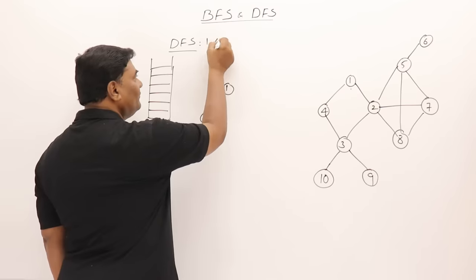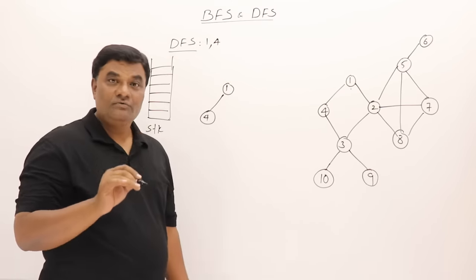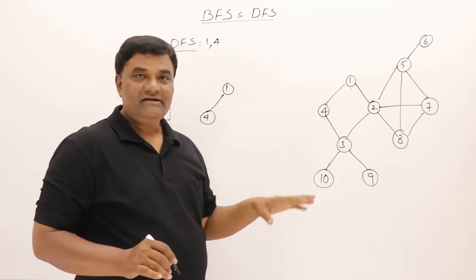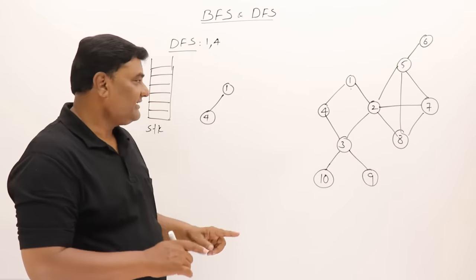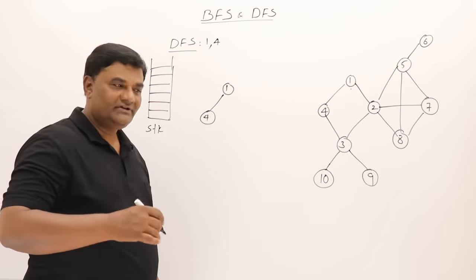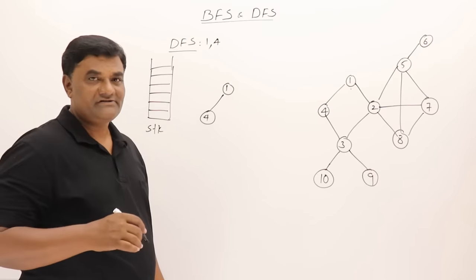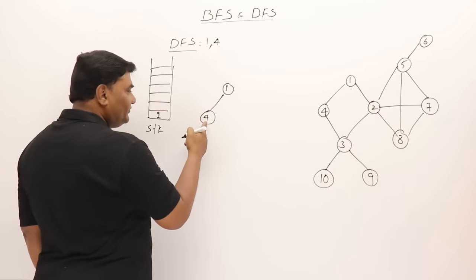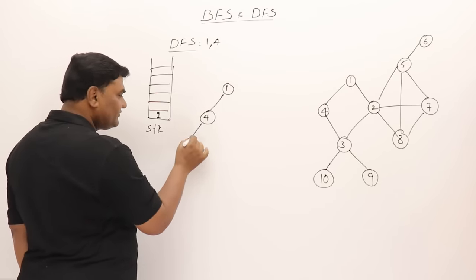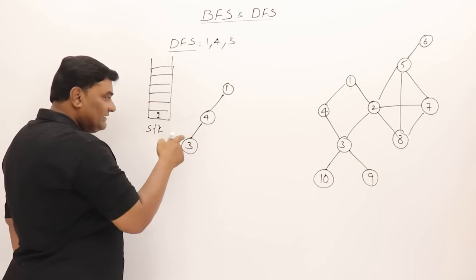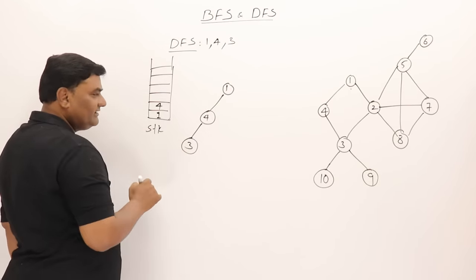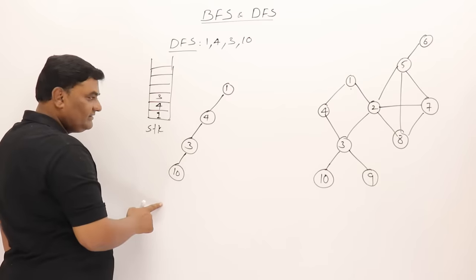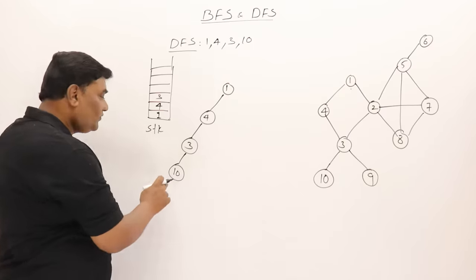The rule in depth first search is: once you have visited one new vertex, leave the remaining adjacent vertices and start exploring the new vertex. So suspend vertex 1 and keep it in the stack. Start exploring 4 — from 4 go to 3. Three is visited. Now suspend 4 and start exploring 3. From 3 go to 10. Visit 10, suspend 3, and start exploring 10 — there is no adjacent vertex of 10.